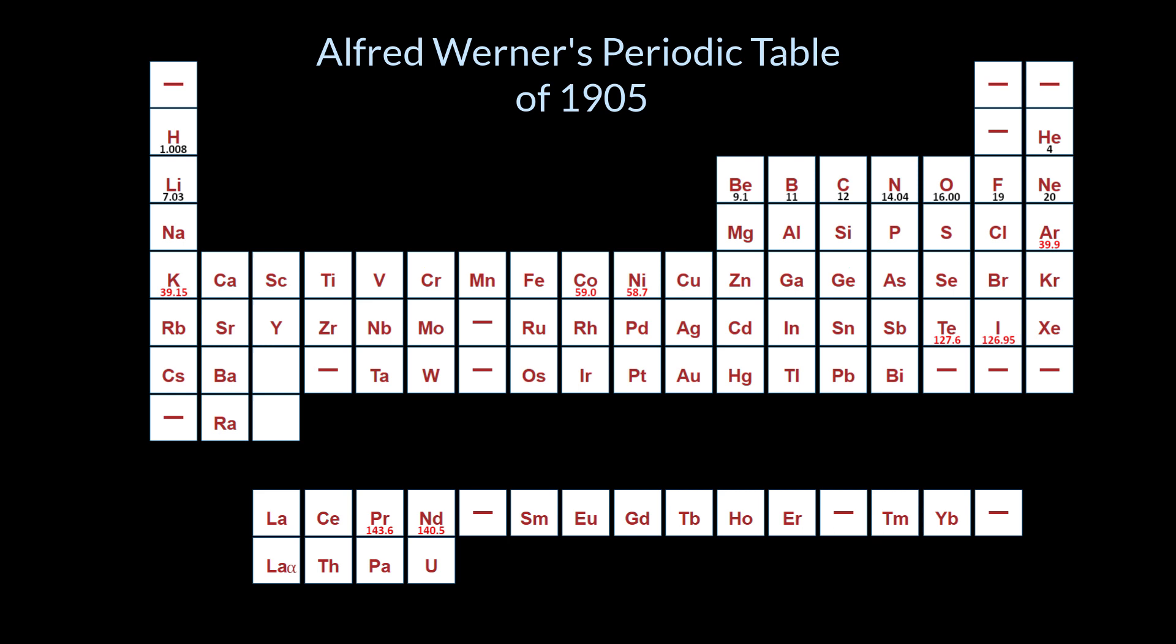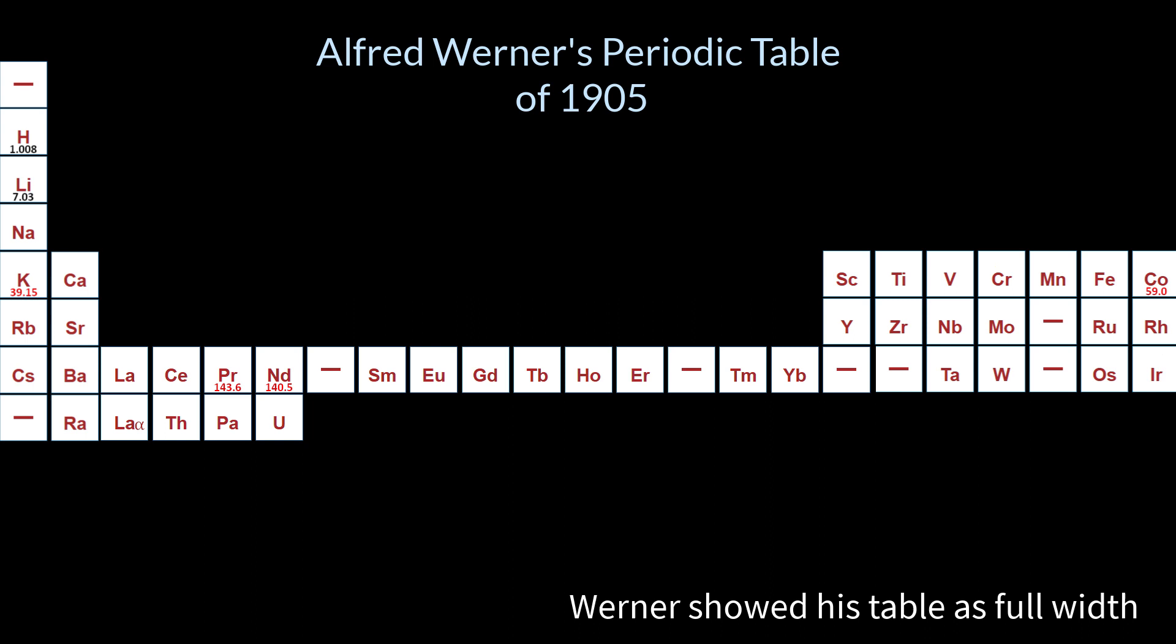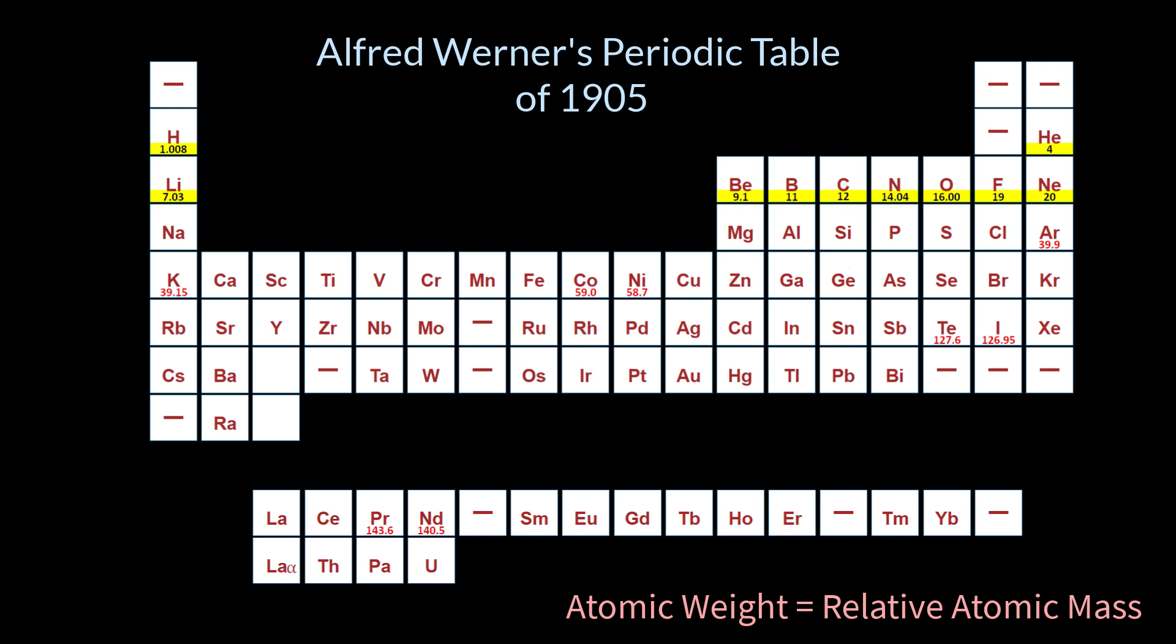Here's Werner's periodic table from 1905. He wrote it full width, but I'll show it in short form. Mendeleev told the world that the periodic table was built by adding to the atomic weight of the preceding element. But more accurate measurements revealed major problems with this. Scientists agonized over the highlighted pairings, where the higher atomic weight element comes first.